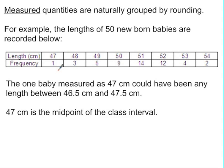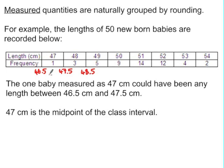Sometimes data can look like discrete exact values when in actual fact it's continuous data which has been rounded. The example here consists of the lengths of 50 newborn babies recorded to the nearest centimetre. So one baby recorded as 47 centimetres could have been any length between 46.5 and 47.5. This is actually grouped data, with class boundaries of 46.5 and 47.5. The values 47, 48, 49 are in fact the midpoints of the class boundaries — measured quantities are continuous data which is naturally grouped by rounding.